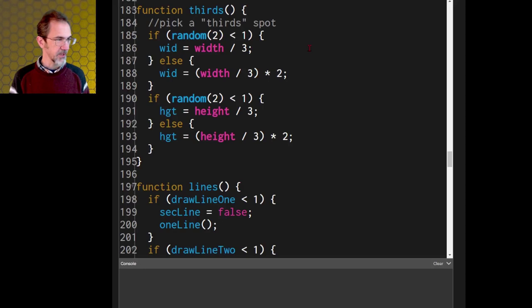So getting into the code now. Here is an example of how I'm choosing the thirds spot. It's just width divided by three or width divided by three times two. And the same with the height. If you wanted to you could vary this. If you didn't want it to be exactly on that spot. You could say plus or minus some random number. And we're saving that information into a couple of variables for the width and the height. This is my radiant code.